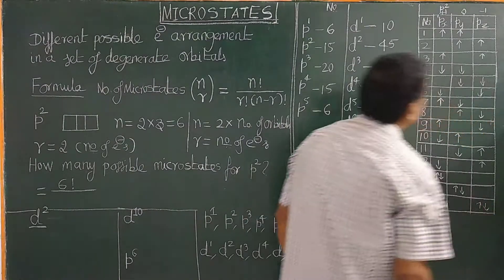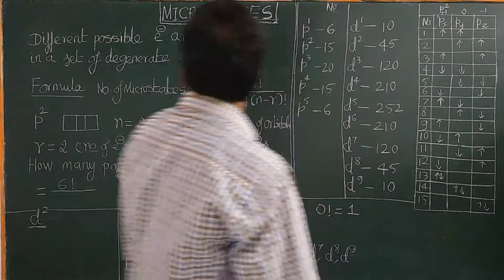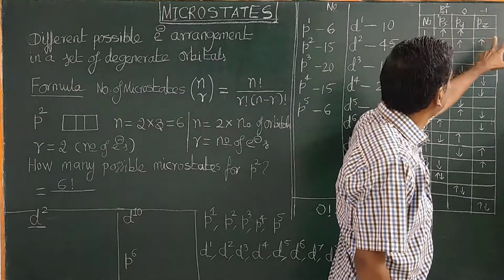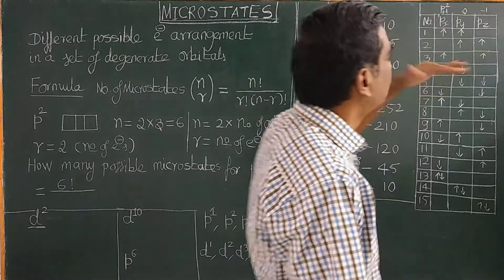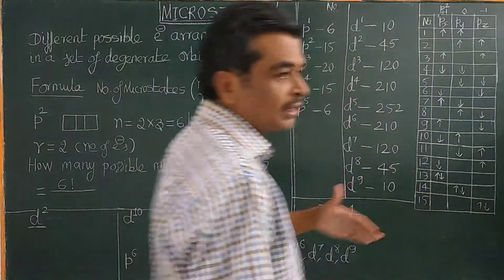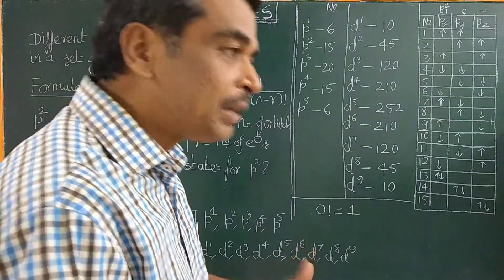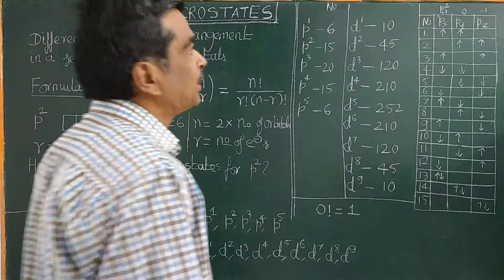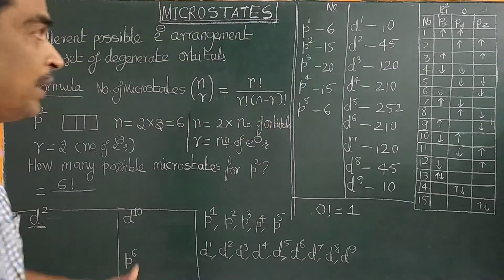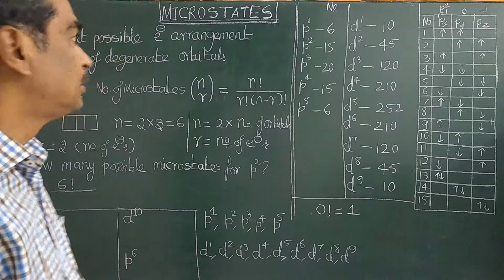So there are 15 possible electronic arrangements in a set of degenerate orbitals. The px, py, pz orbitals are degenerate — they have the same energy. These three orbitals are called triply degenerate. Similarly, the d orbitals are 5-fold degenerate.